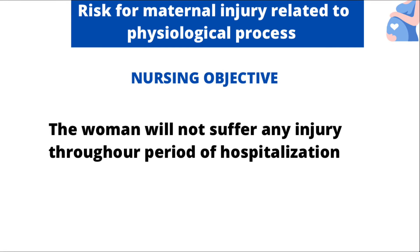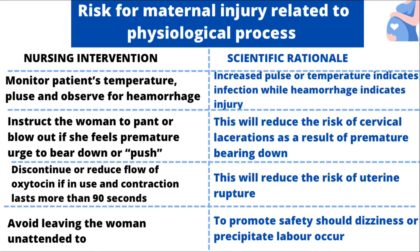The last diagnosis is risk for maternal injury related to physiological process. Because this is a risk diagnosis, there is no evidence. The objective is that the woman will not suffer any injury throughout the period of hospitalization. The first intervention is to monitor the patient's temperature and pulse and observe for hemorrhage. The rationale is that increased pulse or temperature indicates infection, and hemorrhage indicates injury. Next, instruct the woman to pant or blow out if she feels a premature urge to bear down, as this will reduce the risk of cervical lacerations due to premature bearing down.